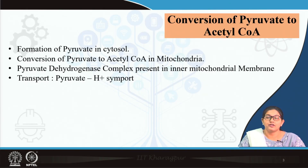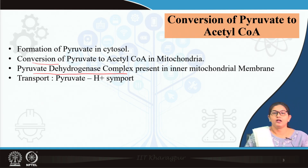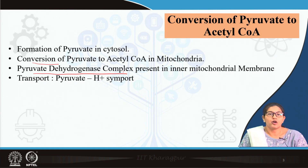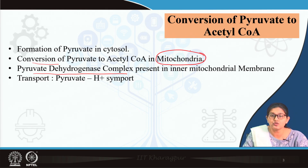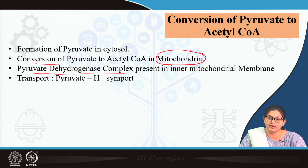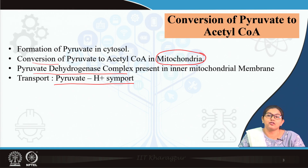Pyruvate from glycolysis forms acetyl coenzyme A with the help of an enzyme. Formation of pyruvate occurs in the cytosol because glycolysis occurs in the cytosol, but the enzyme pyruvate dehydrogenase complex is present in the inner mitochondrial membrane. So basically, conversion of pyruvate to acetyl coenzyme A occurs in mitochondria. Pyruvate enters the mitochondrial matrix via the pyruvate-hydrogen symport transporter.